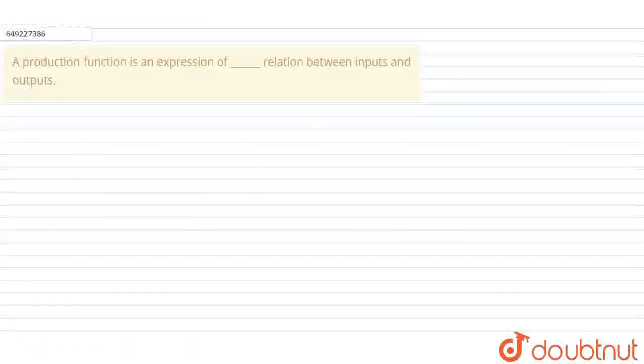Hello everyone, let's solve this question. The question says here: production function is an expression of relation between inputs and outputs. Of which relation?